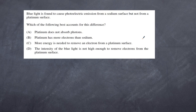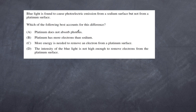Blue light is found to cause photoelectric emission from a sodium surface but not from a platinum surface. Which of the following best accounts for this difference? Is it A: platinum does not absorb photons? B: platinum has more electrons than sodium? C: more energy is needed to remove an electron from a platinum surface? Or D: the intensity of the blue light is not high enough? Platinum can absorb photons if the frequency is right, so A is incorrect.